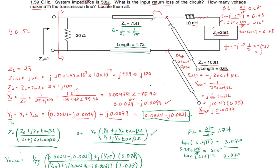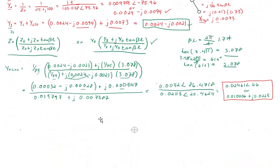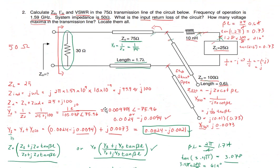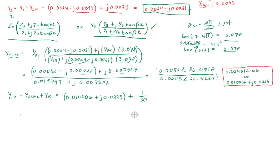We still need to add the shunt resistor. Calling the total admittance Y_n, we use the rectangular form of the transmission line admittance plus Y_R, where Y_R = 1/Z_R = 1/30. Then we add the real parts together.